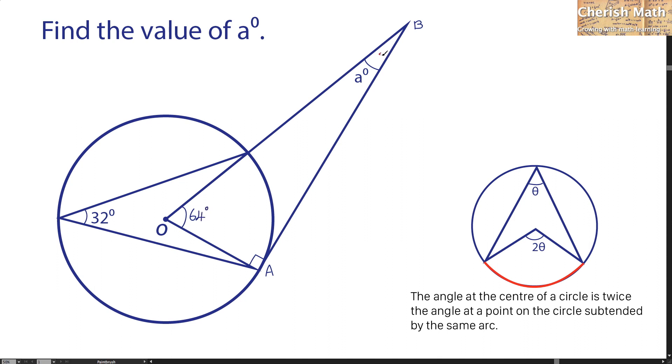I'm going to solve the value of a by using the triangle OAB. In the triangle we know that it consists of 180 degrees for the sum of the angles.